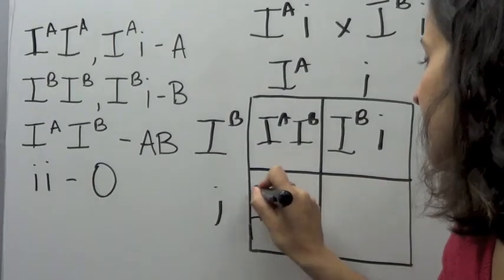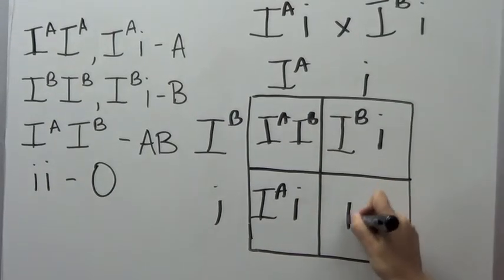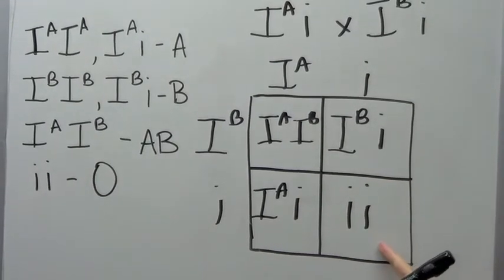25% of their kids are going to have type A blood for the same reason, and then 25% are going to have type O blood.